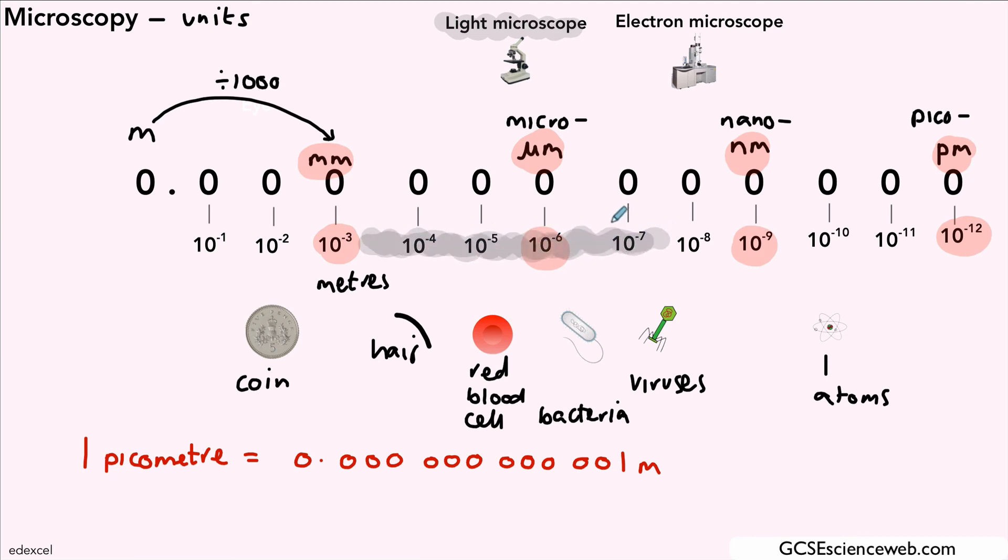Whereas our electron microscope allows us to see much smaller objects that range from around about maybe 10 to the minus 5 or 6 down to about 10 to the minus 9 or minus 10, as you can see there on the diagram. So this is an introduction into the kinds of sizes of objects that we see under the microscopes.